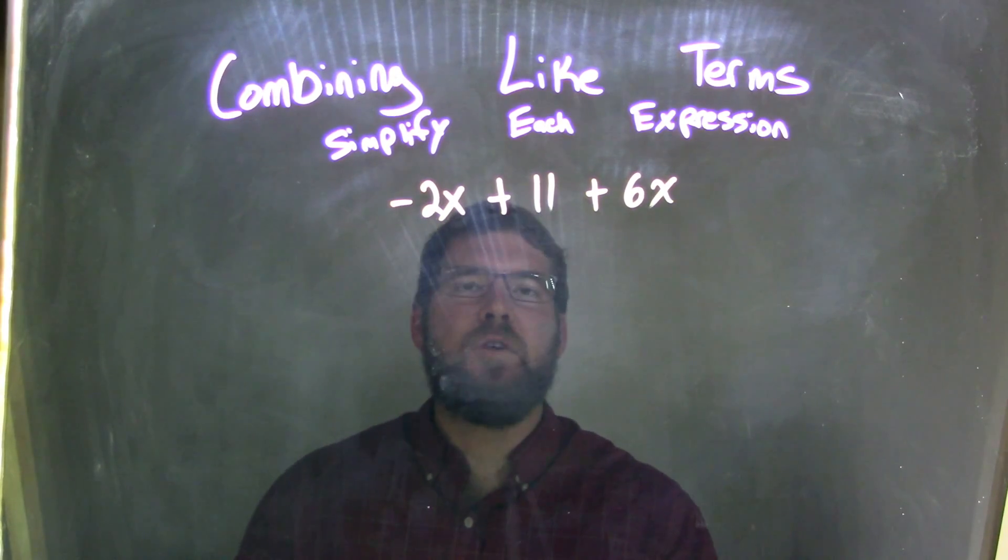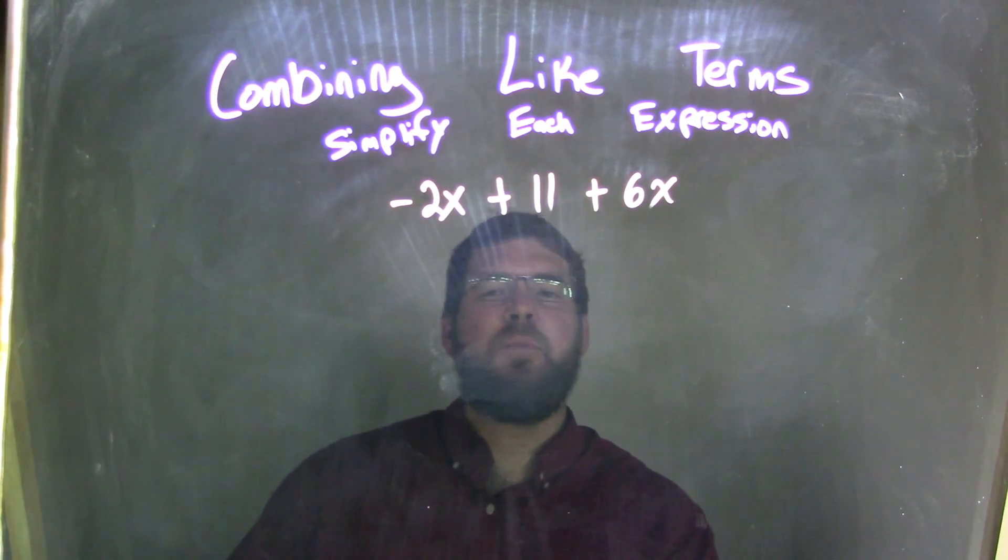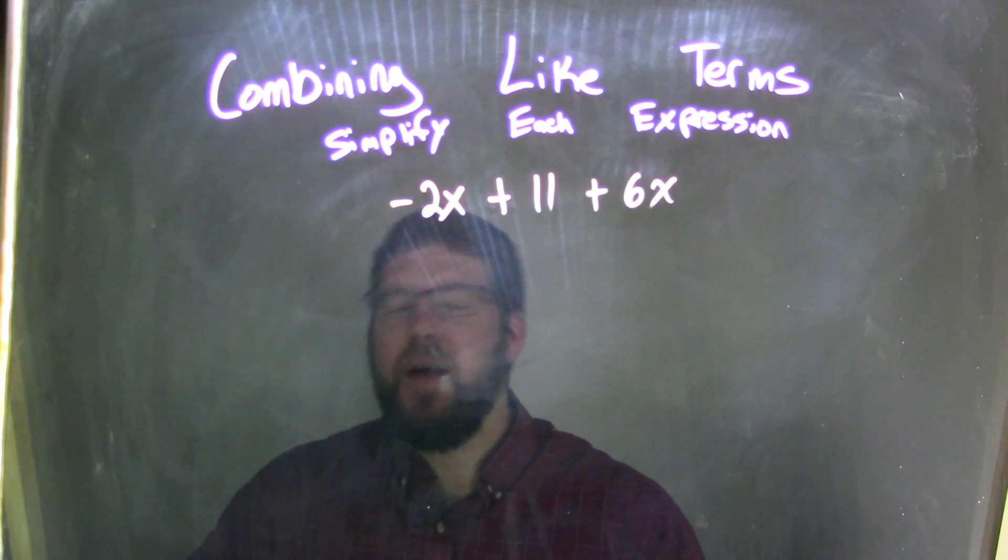Alright, so if I want to combine these terms, I'm going to rearrange this, and by rearranging it, since it's all addition, I can use the commutative property, and I'm going to put my variables first and my numbers second.